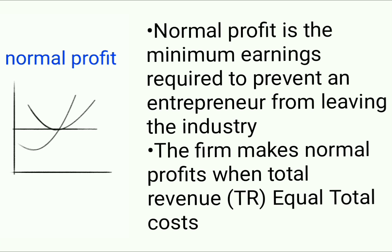Normal profit occurs when average revenue equals average cost. When drawing a normal profit, the Nike-shaped MC line is always present. The key difference is where the AC curve sits: when the curve is below the line, it's economic profit; when the curve is touching the line — neither above nor below — that represents normal profit.